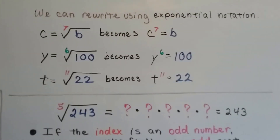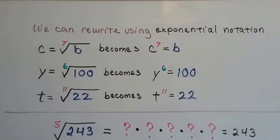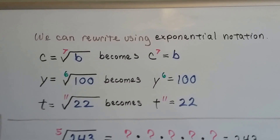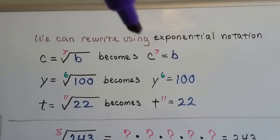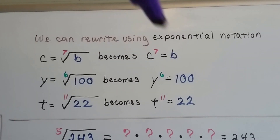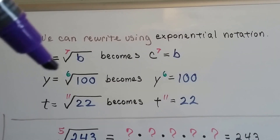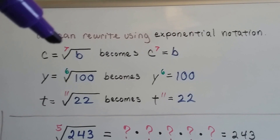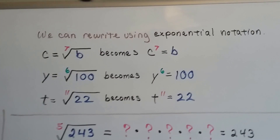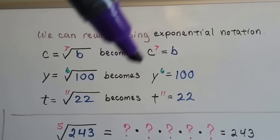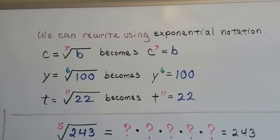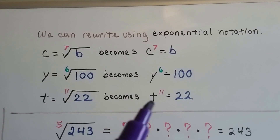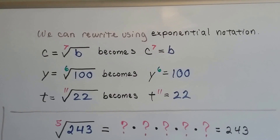We can rewrite using exponential notation. If c equals the seventh root of b, that becomes c to the seventh power equals b. If y equals the sixth root of 100 — that's an even one — it becomes y to the sixth equals 100. And if t equals the 11th root of 22, it becomes t to the 11th equals 22.